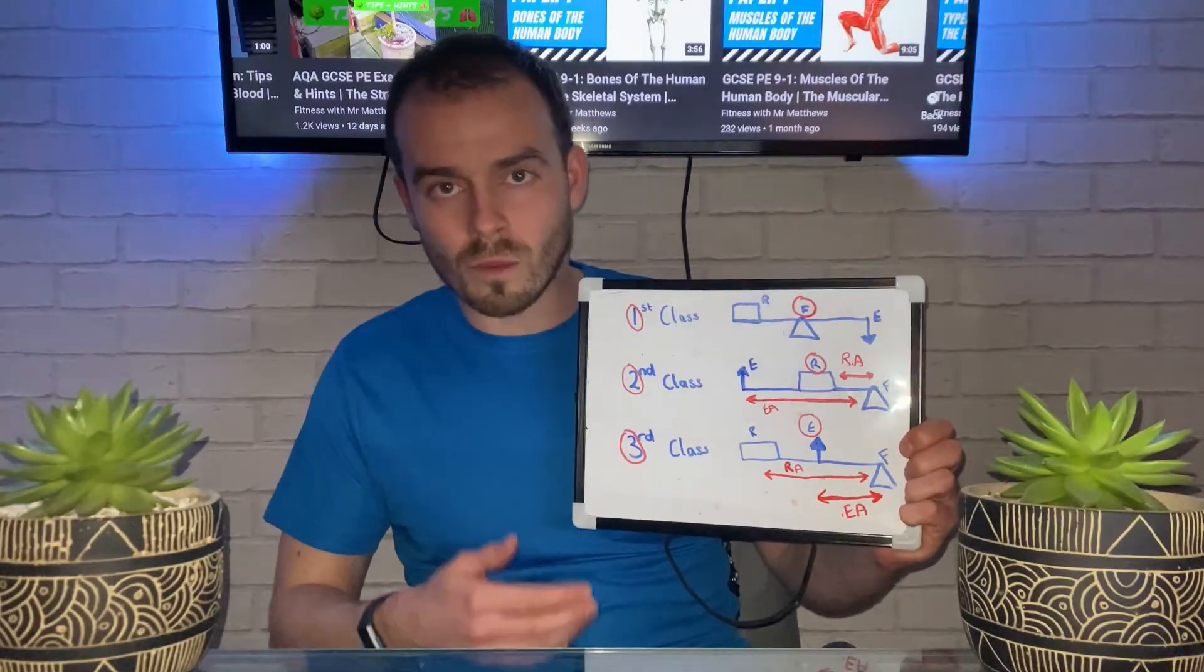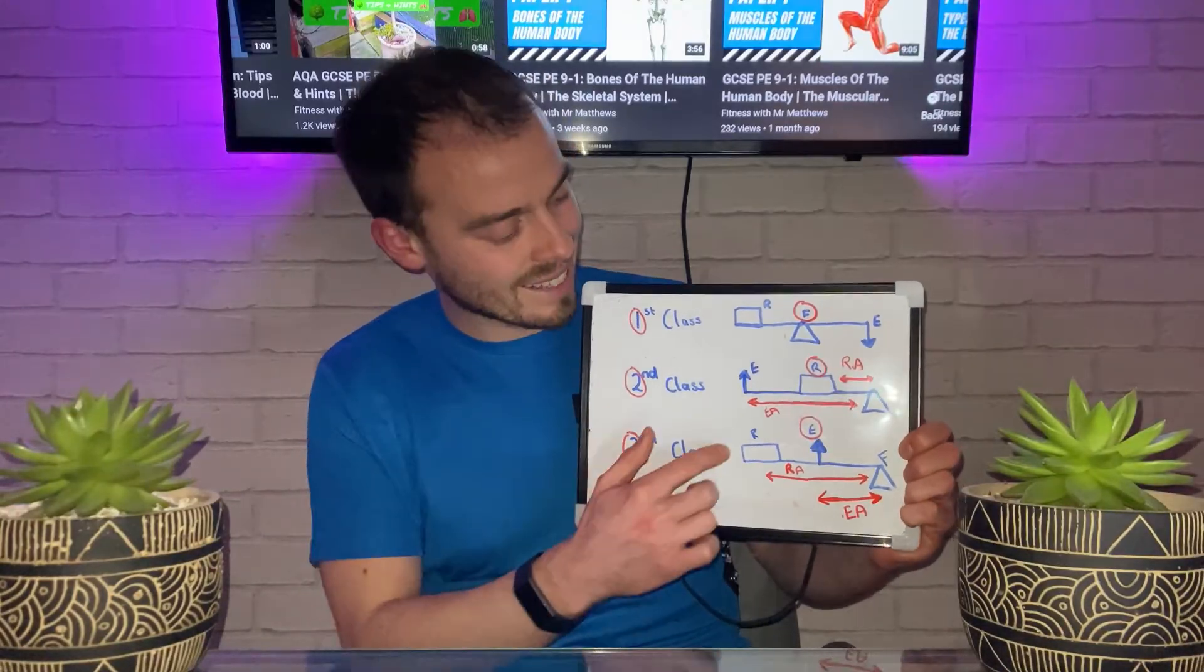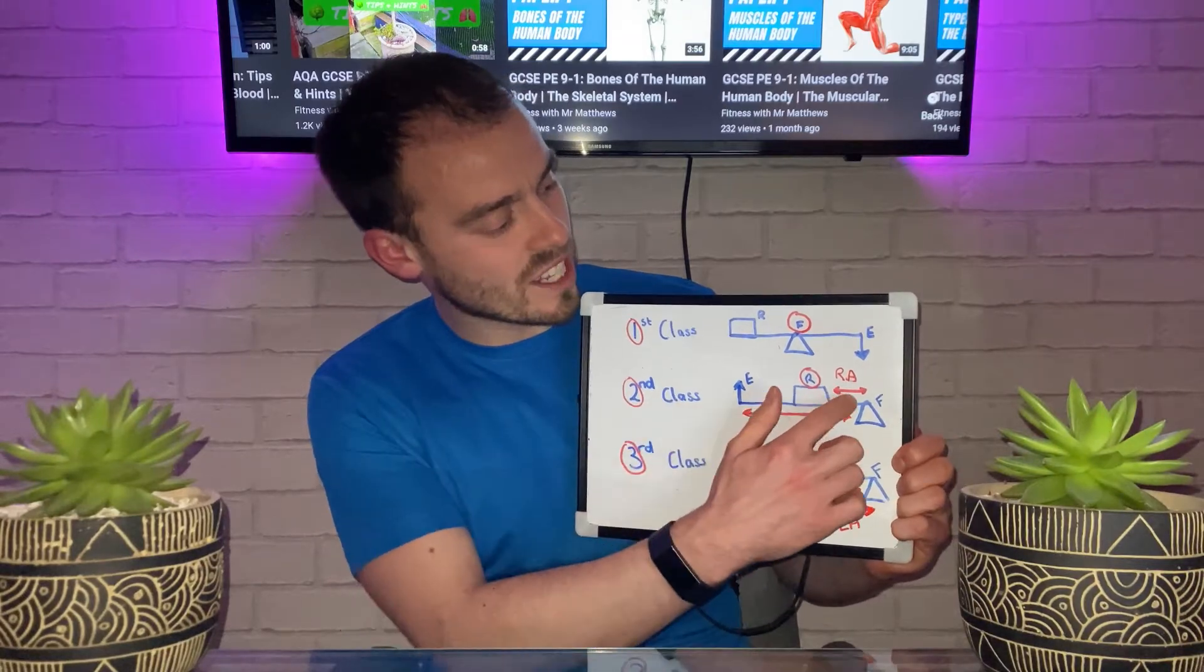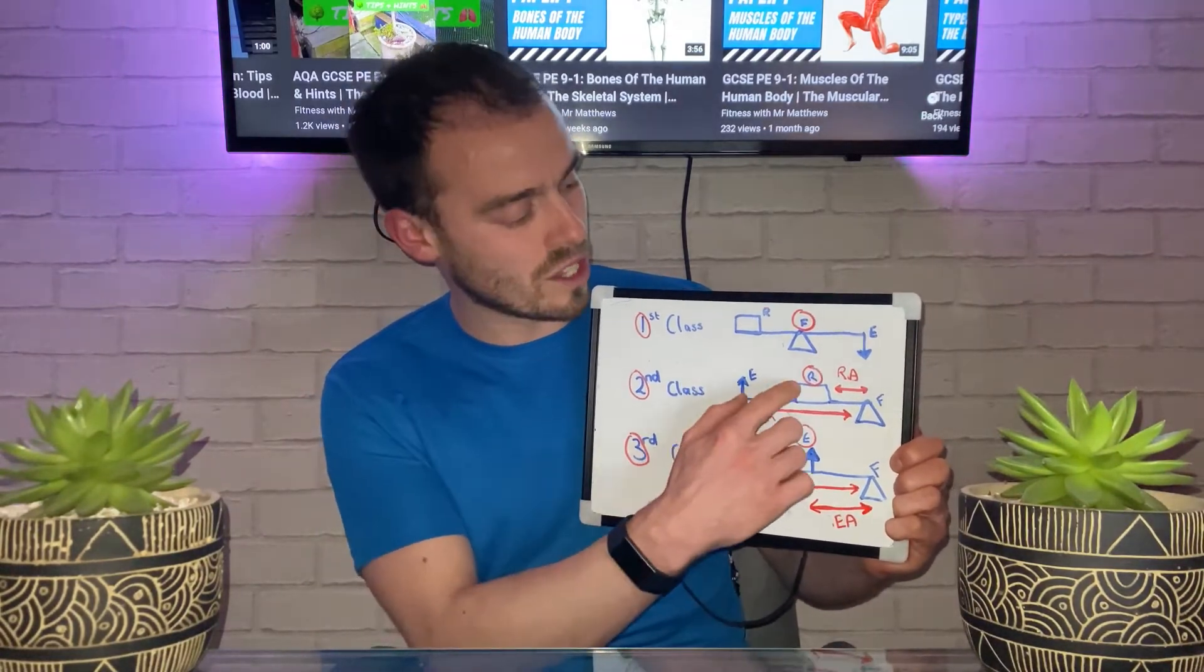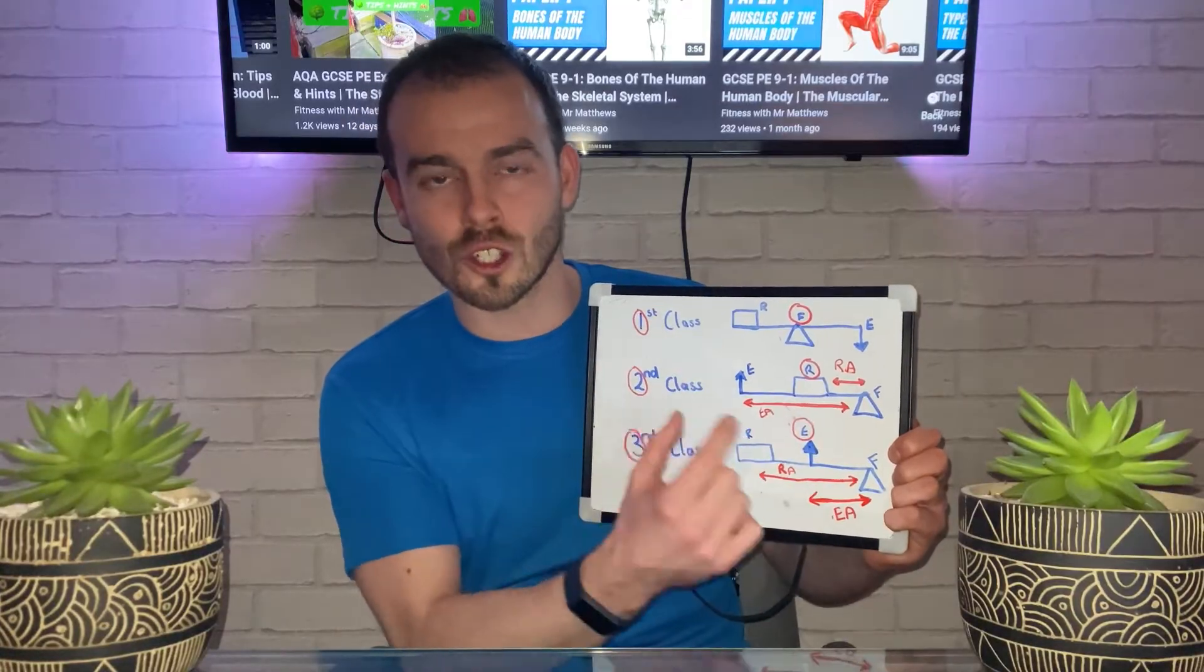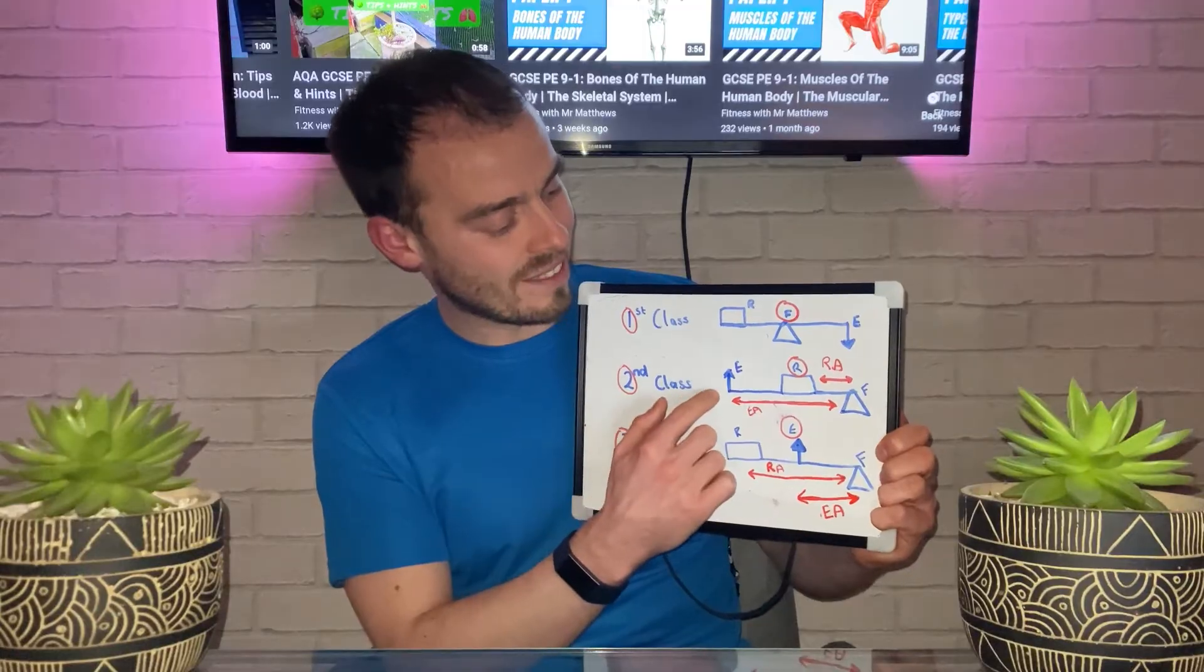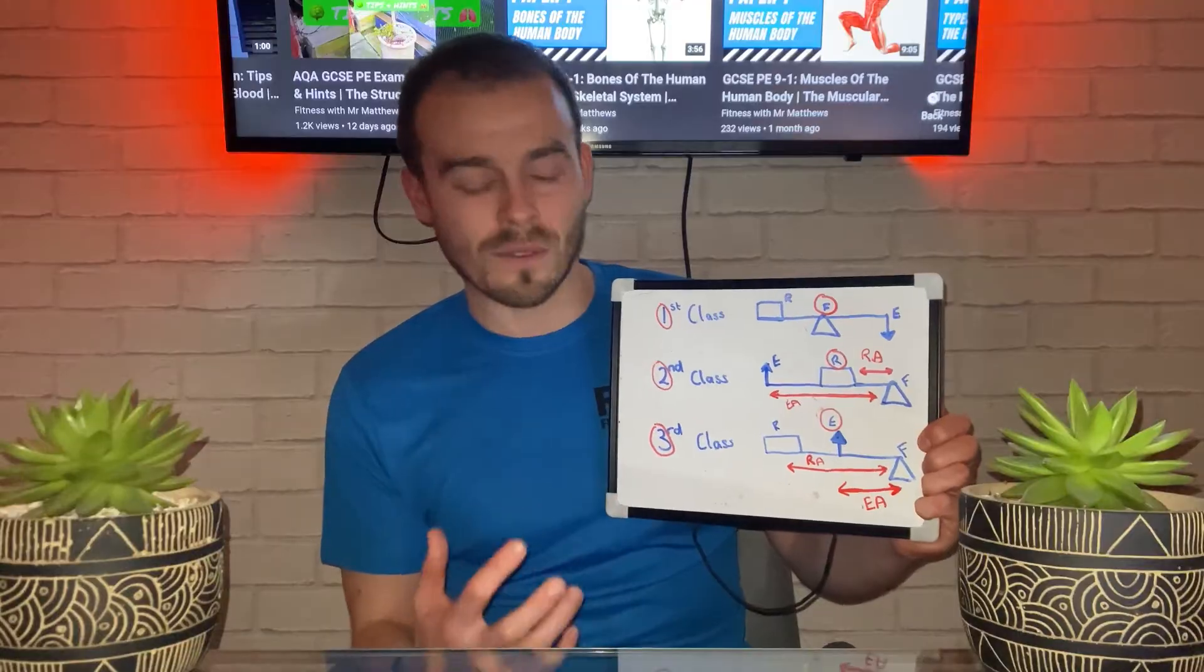Let's move on to mechanical advantage. A second class lever system has a mechanical advantage because the resistance arm is short. This means the distance between the resistance and the fulcrum is shorter than the distance between the fulcrum and the effort. So there's a long effort arm between the fulcrum and the effort.